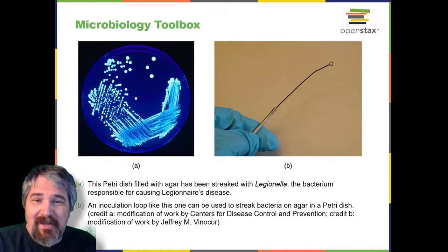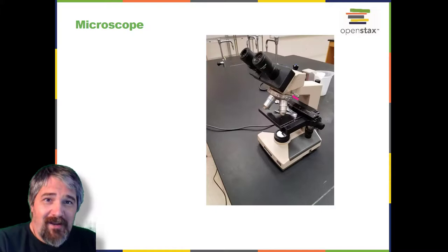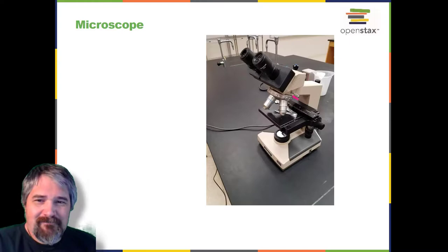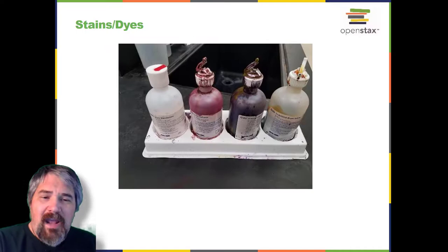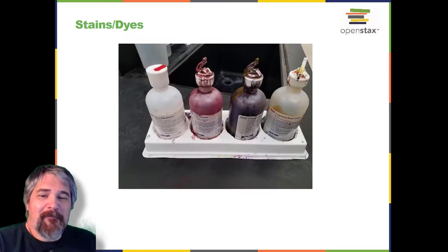Microscopes produce magnified images of microorganisms, human cells and tissues, and many other types of specimens too small to be observed with the naked eye. Pictured here is the classic Olympus CH2 compound bright field light microscope, common in microbiology teaching labs. Stains and dyes are used to add color to microbes so they can be better observed under a microscope. Some dyes can be used on living microbes, whereas others require specimens to be fixed with chemicals or heat before staining. Some stains only work on certain types of microbes due to differences in cellular chemical composition. Pictured here are the reagents employed in the Gram stain, which will be discussed in great detail in the next chapter.